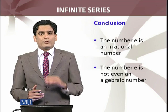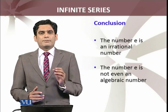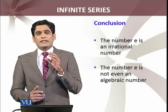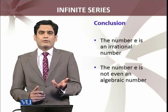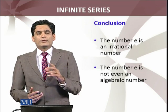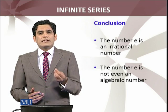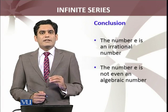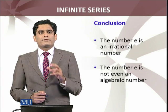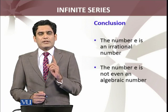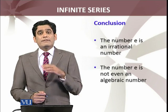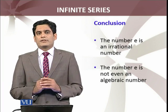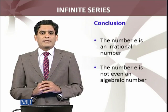Which statement leads to this contradiction? We had supposed that e is a rational number. Since that supposition leads to a contradiction, it is a false statement, and therefore e is not rational — e is an irrational number. In fact, e is not even an algebraic number. Algebraic numbers are roots of polynomials with rational coefficients, and e is not even algebraic — it is a transcendental number. Thus we have proved the irrationality of the number e.